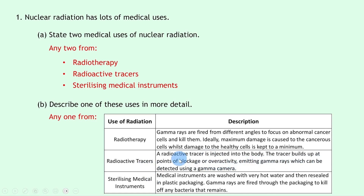For radioactive tracers, you could say that a radioactive tracer is injected into the body; the tracer builds up at points of blockages or overactivity, emitting gamma rays which can be detected using a gamma camera. For sterilizing medical instruments, medical instruments are washed with very hot water and then resealed in plastic packaging; gamma rays are then fired through the packaging to kill off any bacteria that remains.